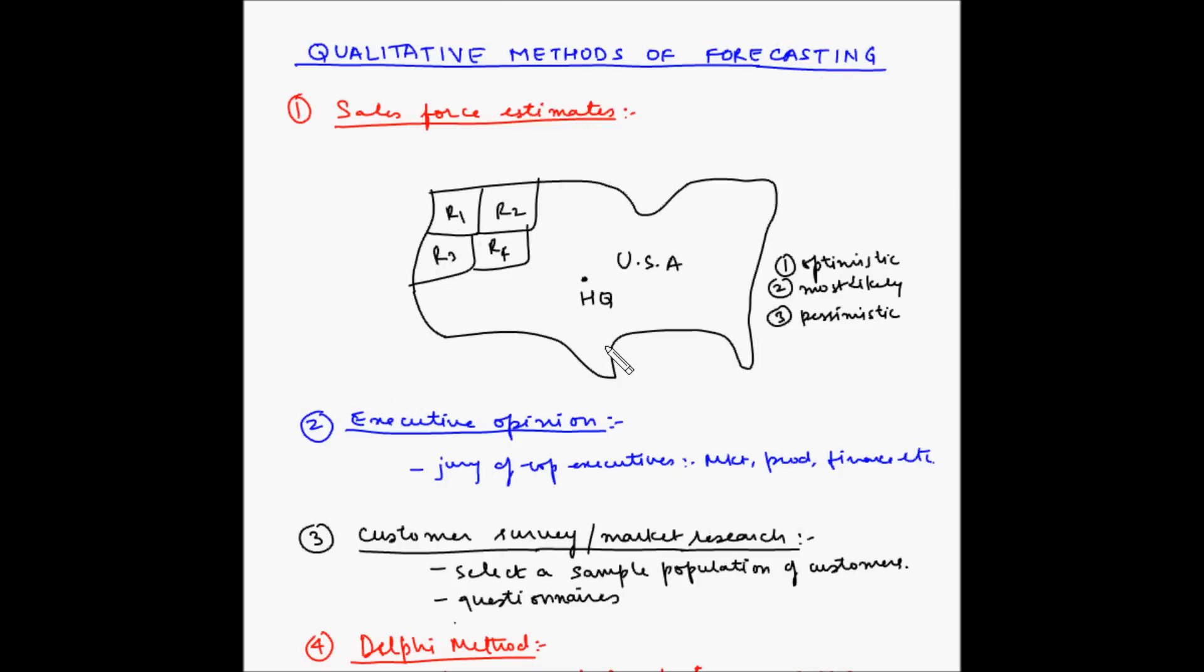So, these are the four most frequently used qualitative methods of forecasting.